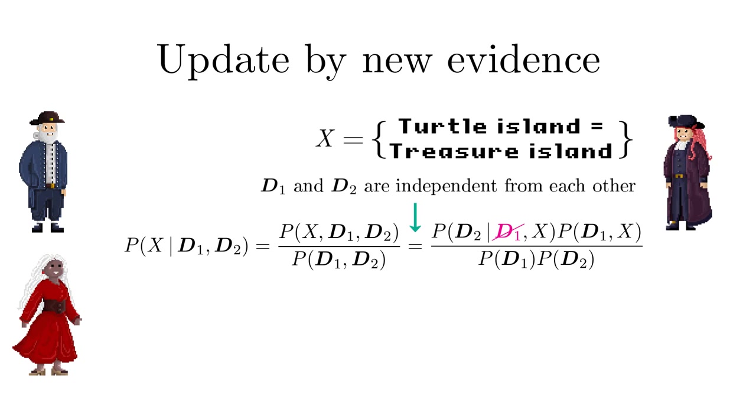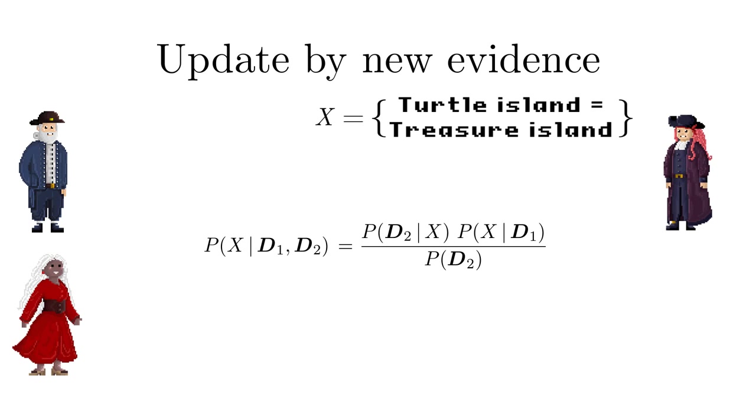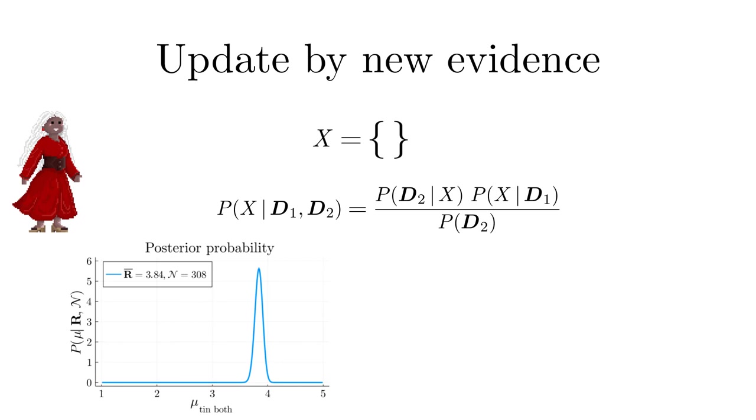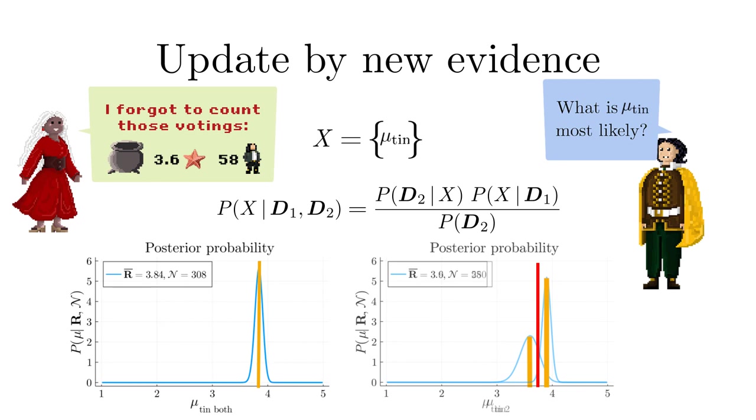So instead of taking both data sets in one step into account we can use it iteratively. In that case d1 defines the prior for the next iteration step where d2 is taken into account. The result of the posterior can again be summarized by the mode or maximum of the posterior which is called the map or the mean to gain an estimation for the parameter set x. A more reliable and robust estimator for the parameters is given by the mean. This allows also to quantify its uncertainty by the corresponding standard deviation.